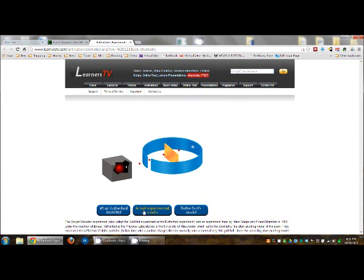Every now and then, however, an alpha particle was scattered or deflected at a large angle. In some instances, an alpha particle actually bounced back in the direction from which it had come. This was a most surprising finding, for in Thomson's model, the positive charge of the atom was so diffuse, or spread out, that the positive alpha particles were expected to pass through the foil with very little deflection.